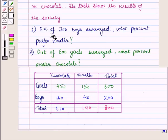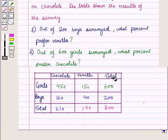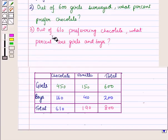We have to find: out of 200 boys surveyed, what percent prefer vanilla. In the second part, out of 600 girls surveyed, what percent prefer chocolate. And in the third part, out of 610 who prefer chocolate, what percent are girls and boys.